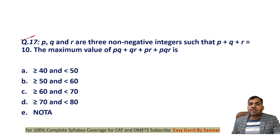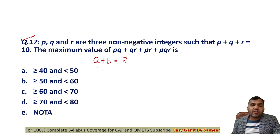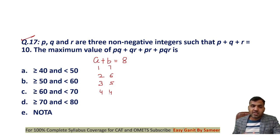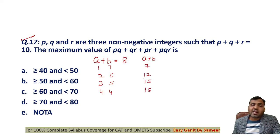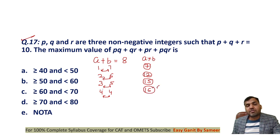Question number 17: p, q, and r are non-negative integers such that p + q + r = 10. Find the maximum value of pq + qr + pr + pqr. Consider the analogy: if a + b = 8 with non-negative integers, the product ab is maximized when a and b are as close as possible — (1,7)→7, (2,6)→12, (3,5)→15, (4,4)→16. As values come closer together, the product increases and is maximum when they are equal.